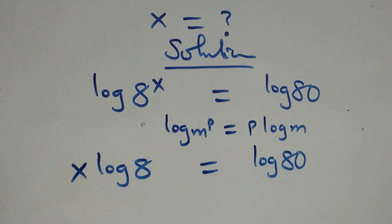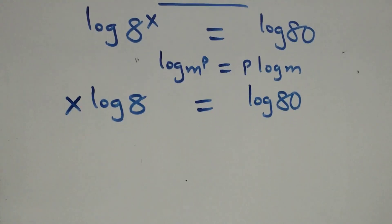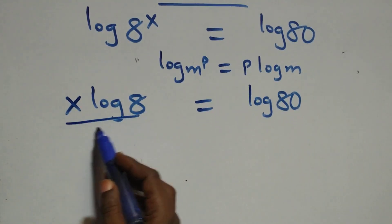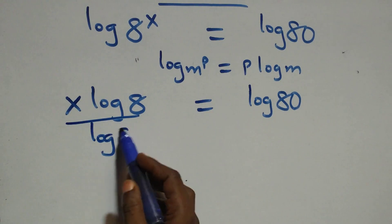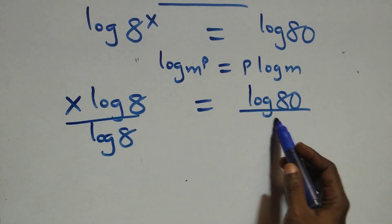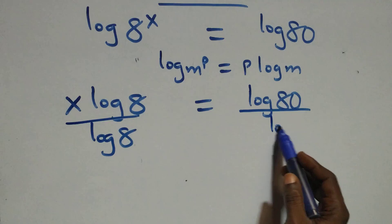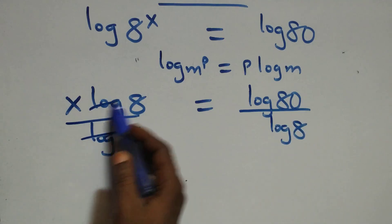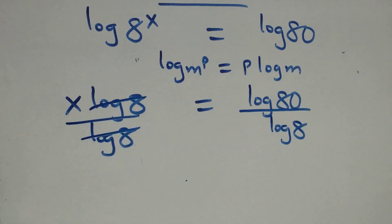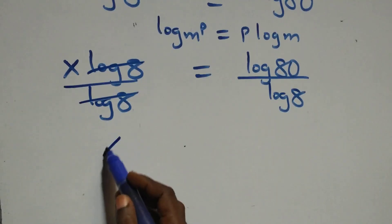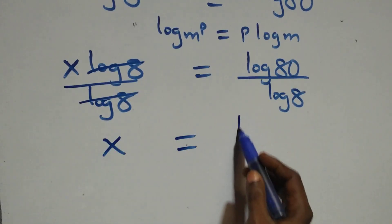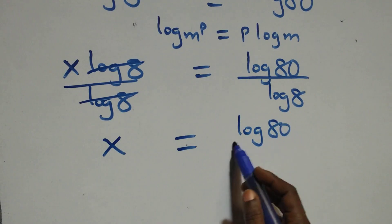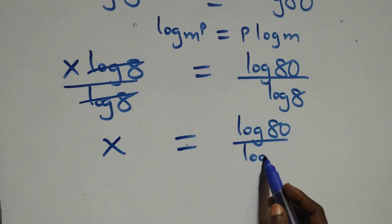The next step here, we divide both sides by log8. Log8 cancels each other and we have x = log80 over log8.